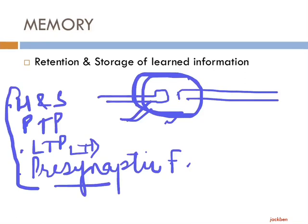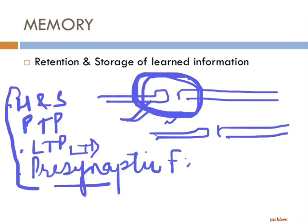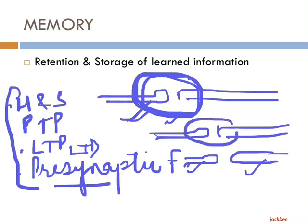Before acquiring new information, synaptic transmission was already happening. At the time of acquiring new information, that synaptic transmission got a certain change. In future, when the next synaptic transmission happens between the pre-synaptic and post-synaptic neuron, it will have a history — that history being the acquisition of new information through a change in synaptic transmission.